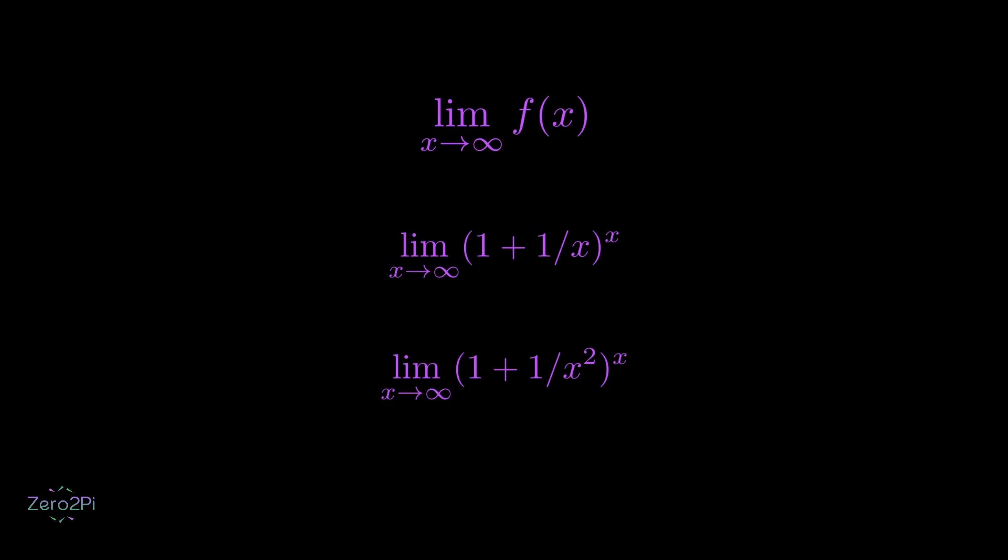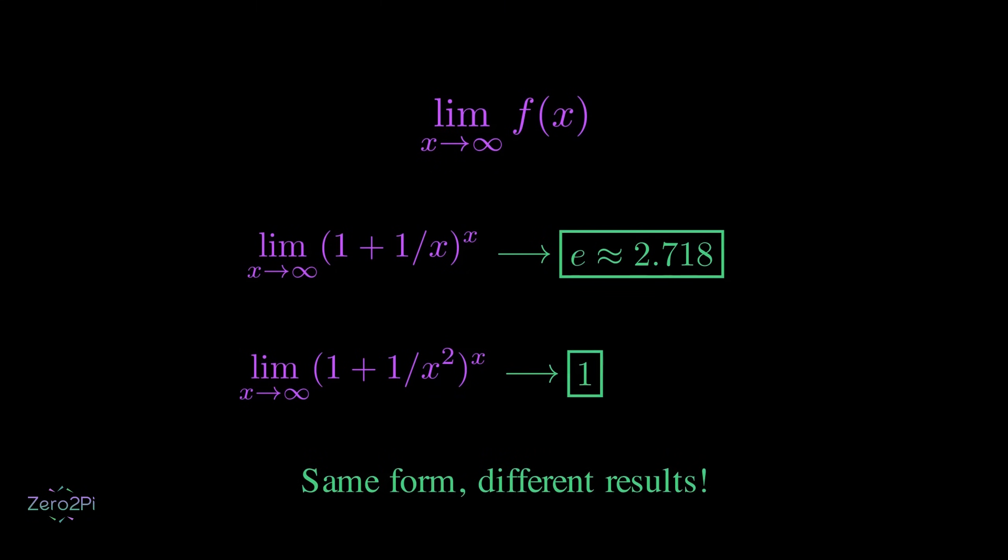But guess what? In the first function, the limit equals e, which is about 2.718. In the second function, the limit is just 1. Same form, totally different results.